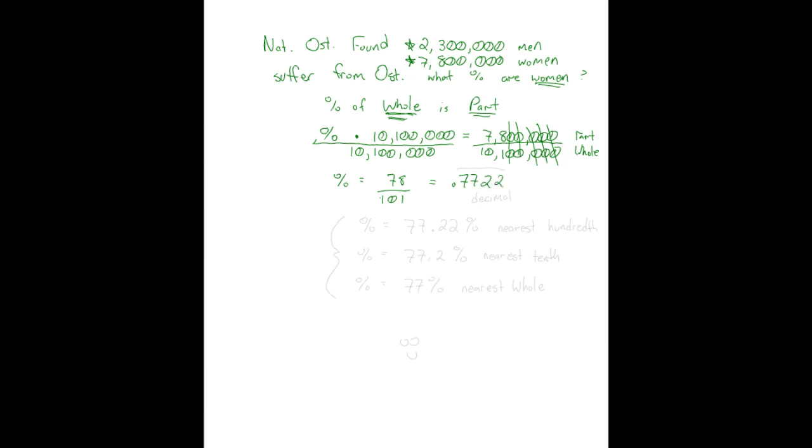And actually, this is repeating. It's 7722, 7722, 7722. So I could put a bar over this whole four-digit number. Now, how do I want to write this? Well, probably, this is a decimal. So remember, I've got to convert this to a percent. So the percentage is going to be equal to 77.22. That would be to the nearest hundredth. You could write it as 77.2. That would be to the nearest tenth. You could write it as just 77%. That would be to the nearest whole number.